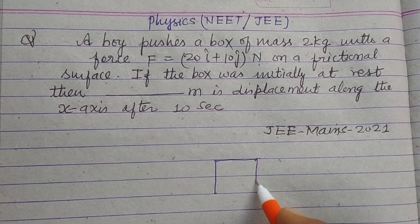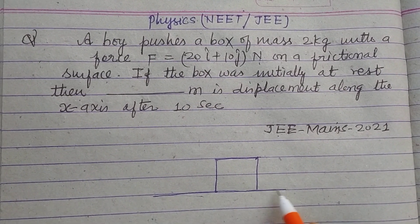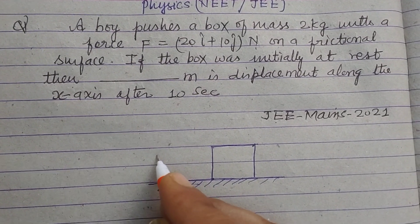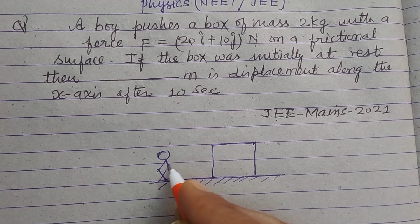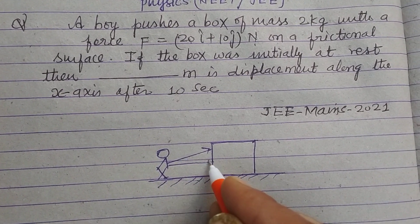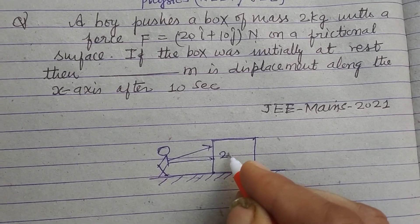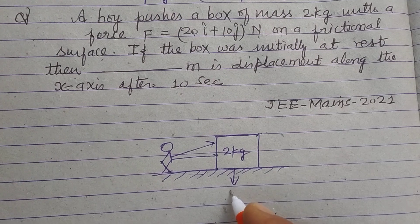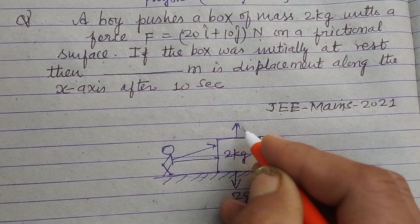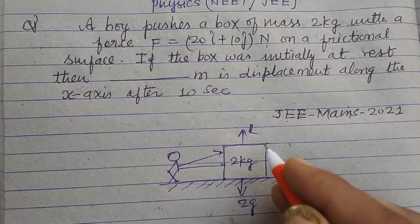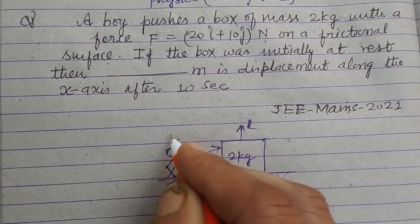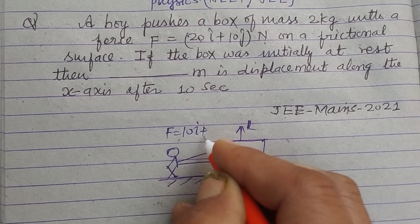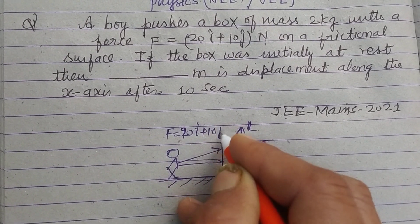this is a box on a smooth inclined plane and this is a boy which is pushing this box of mass 2 kg. The force acting on this box is 20 i cap plus 10 j cap.